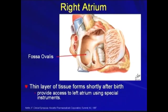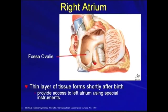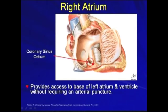There are two structures worth mentioning in the right atrium. The first is the fossa ovalis — a thin layer of tissue formed shortly after birth. It provides access to the left atrium and ventricle without requiring an arterial puncture. The other structure is the coronary sinus ostium, which also provides access to the base of the left atrium and ventricle without arterial puncture, and is the site where left ventricle leads will enter through.